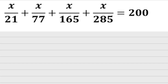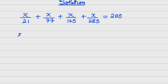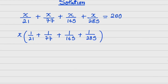Hello students, welcome to my channel Chory Math. Now let's solve this question. We have to solve it using — actually, the first thing I'll do is factorize x, so that I'm going to have x times (1/21 + 1/77 + 1/165 + 1/285) equals 200.